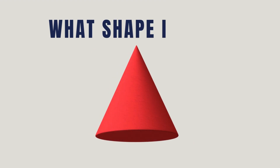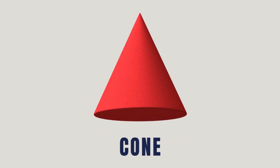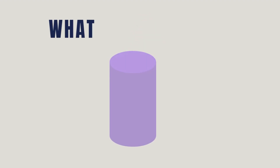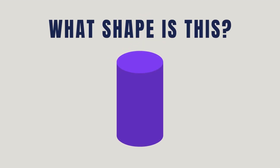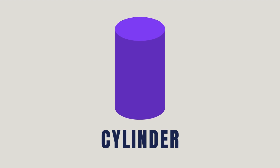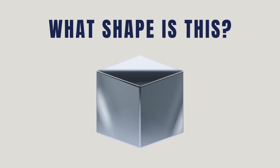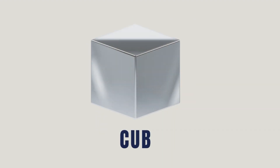What shape is this? It's a cone. What shape is this? It's a cylinder. What shape is this? It's a cube.